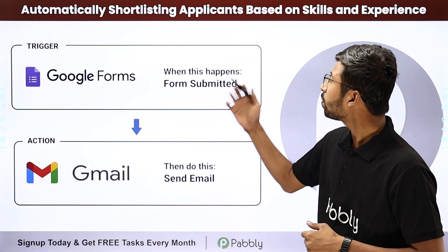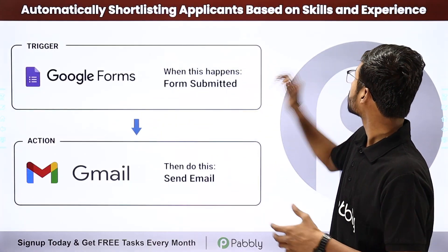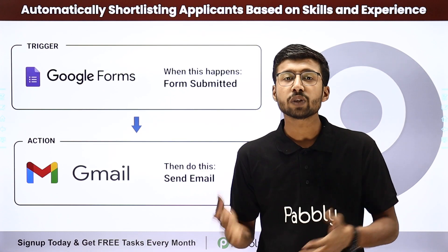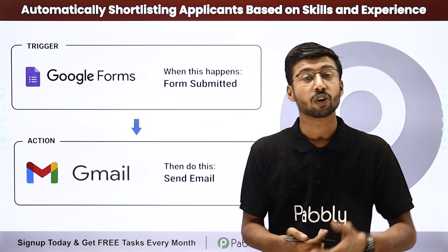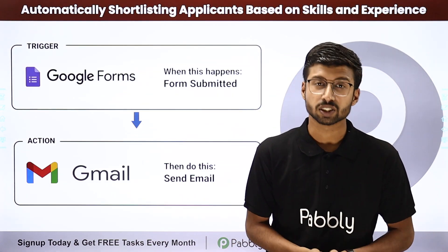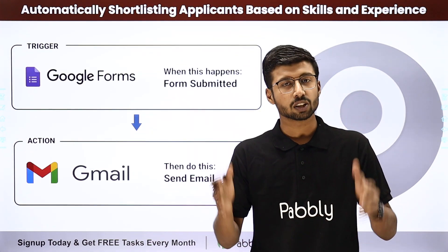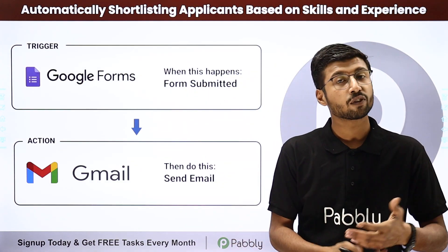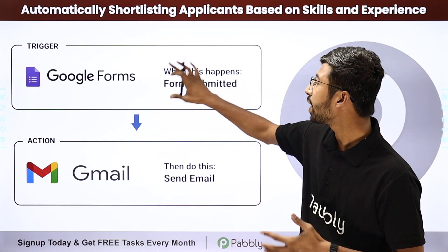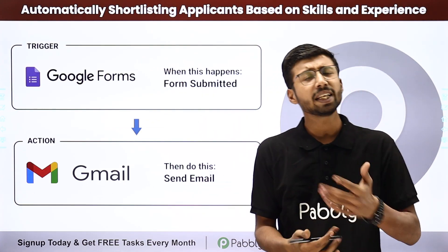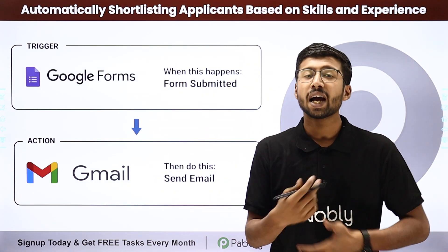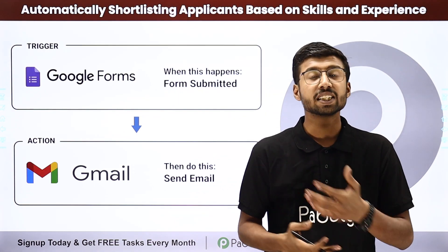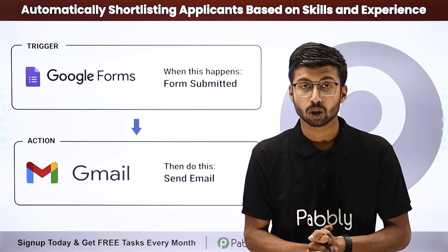Starting with automatically shortlisting applicants based on skills and experience. On a regular basis, new candidates keep on applying in our organization for a position, and shortlisting a lot of candidates can be very tough. Using this automation, what you have to do is create a form using Google Forms or any other online form building application and share that form with your candidates. In that form, the candidates can enter their details and apply for the job.